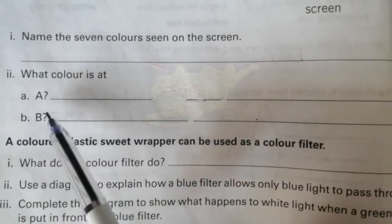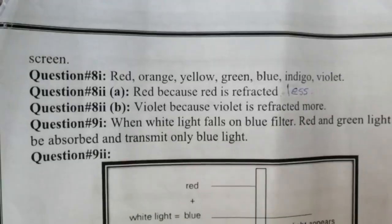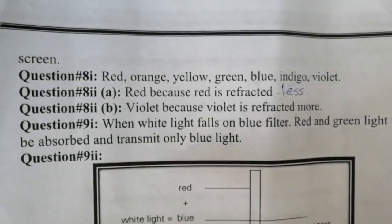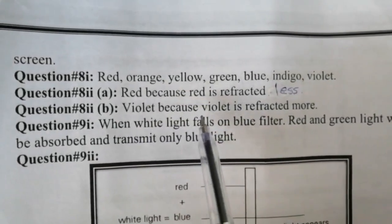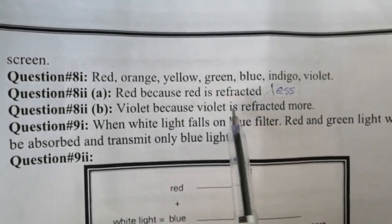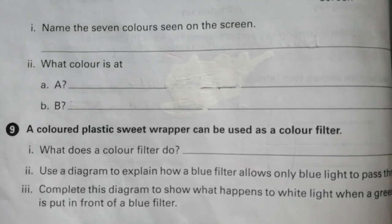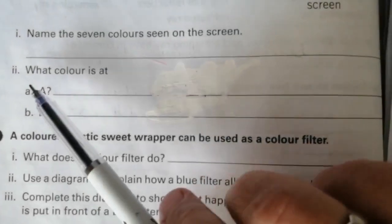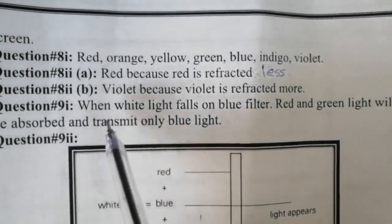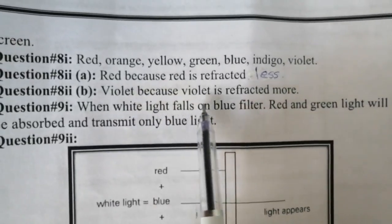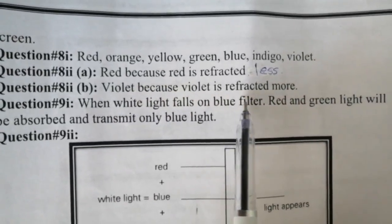Question number 8, part 2: what color is at A? The answer is: the color at A is red, because red is refracted least. Part 2: what color is at B? The color at B is violet, because violet is refracted most.